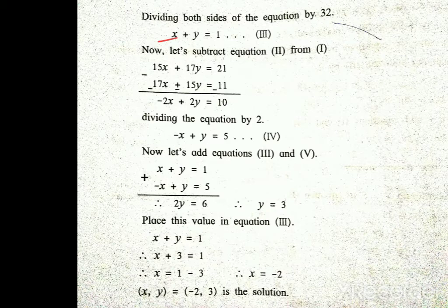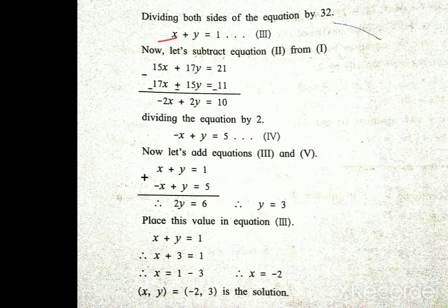Now let us subtract equation 2 from equation 1. This gives minus 2x plus 2y is equal to 10. Dividing the equation by 2, we get minus x plus y is equal to 5. That is equation number 4.